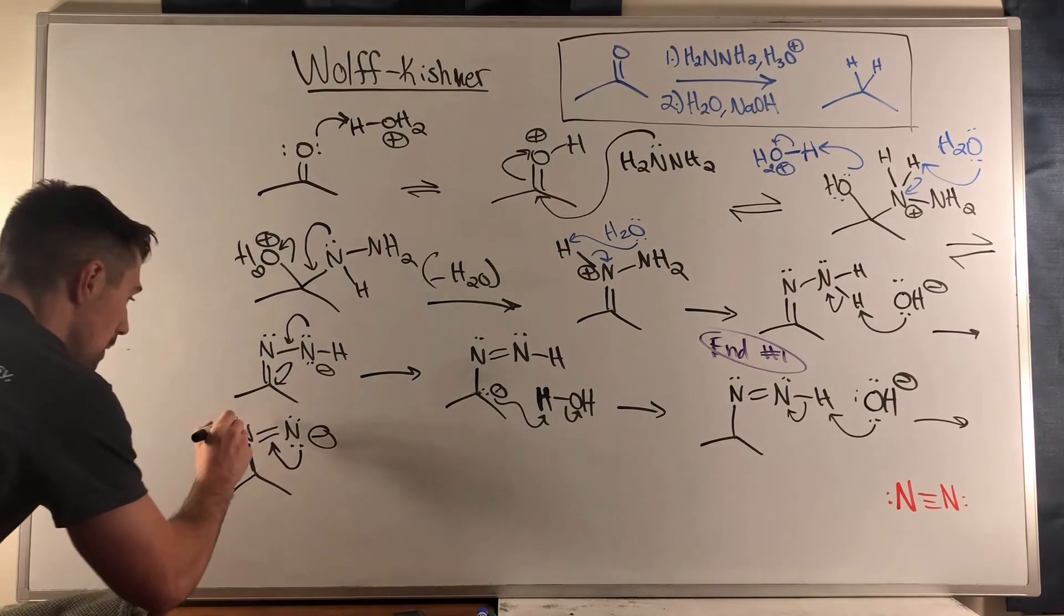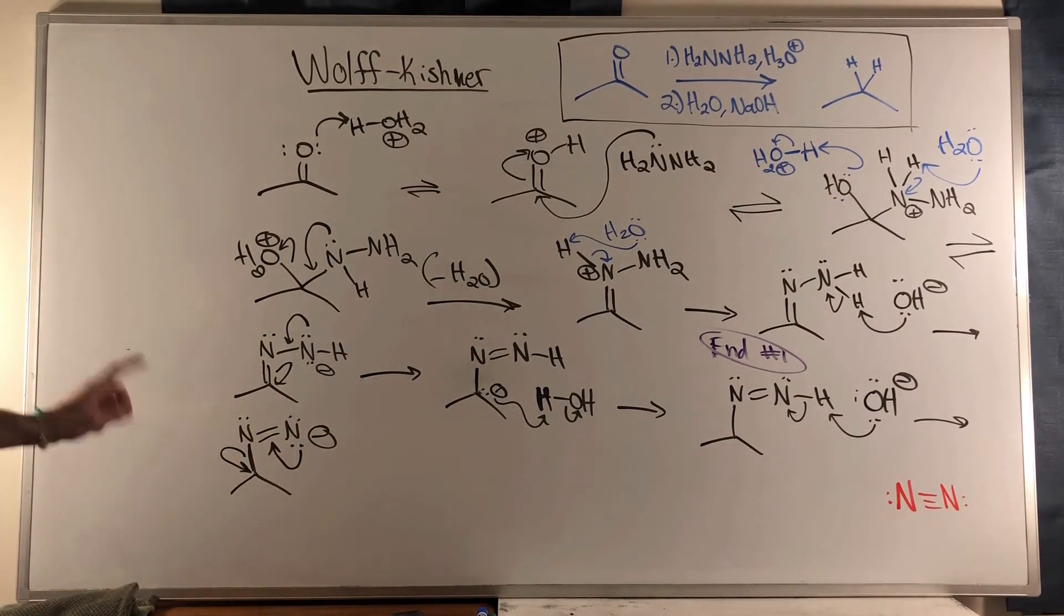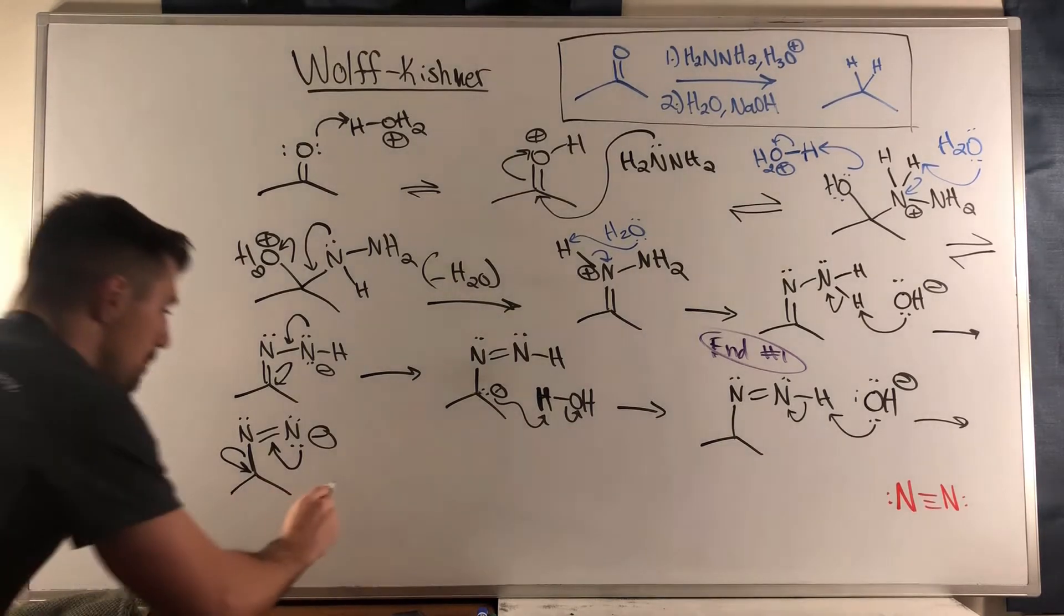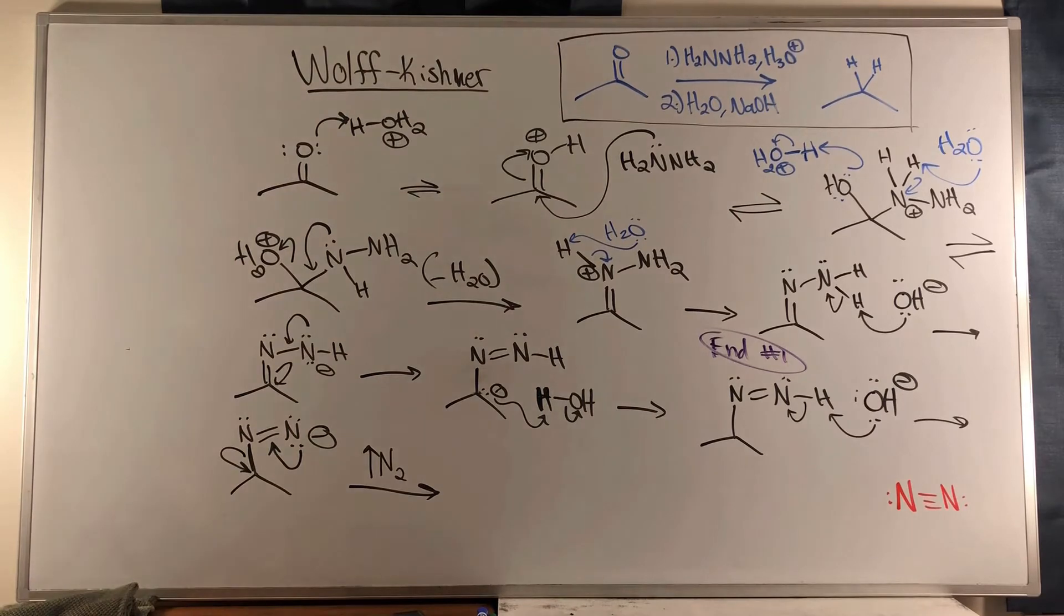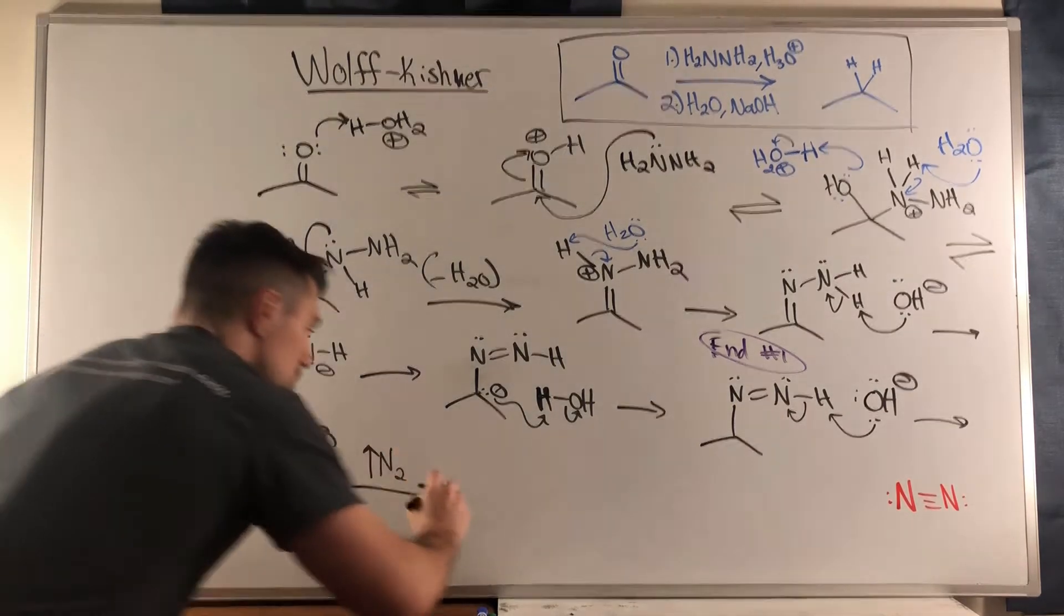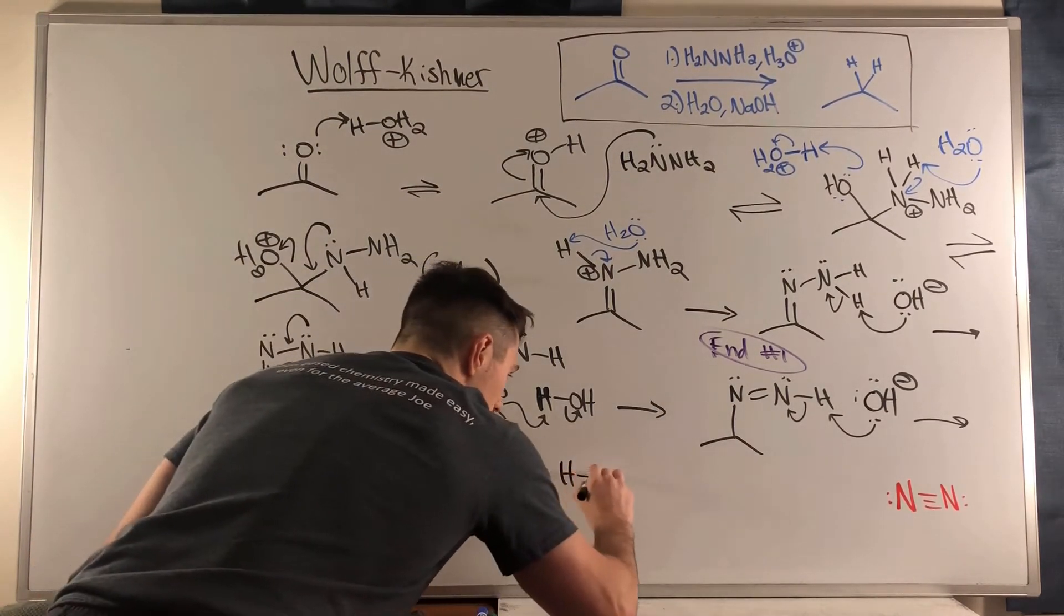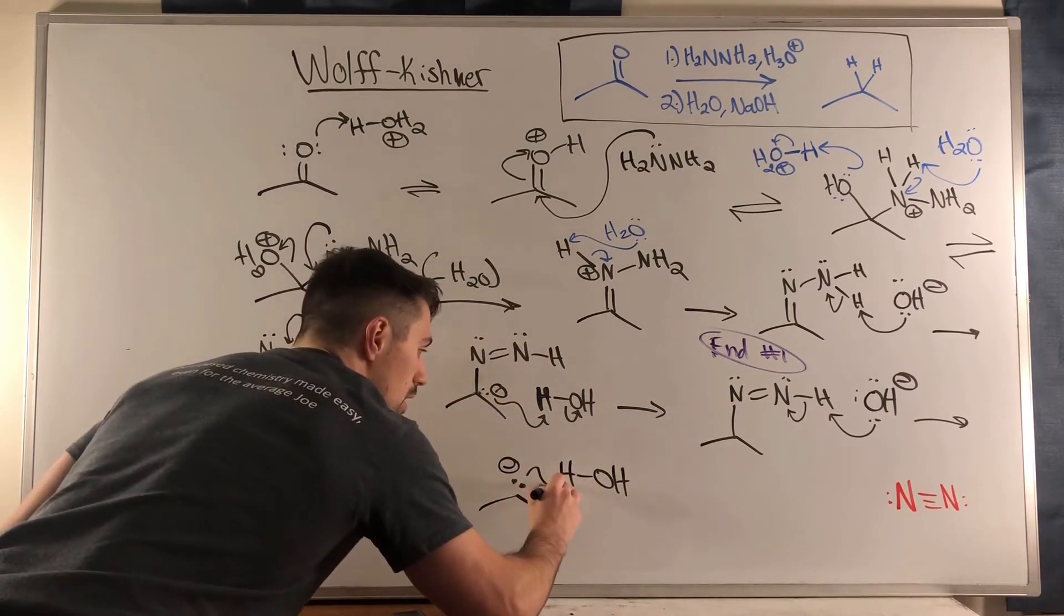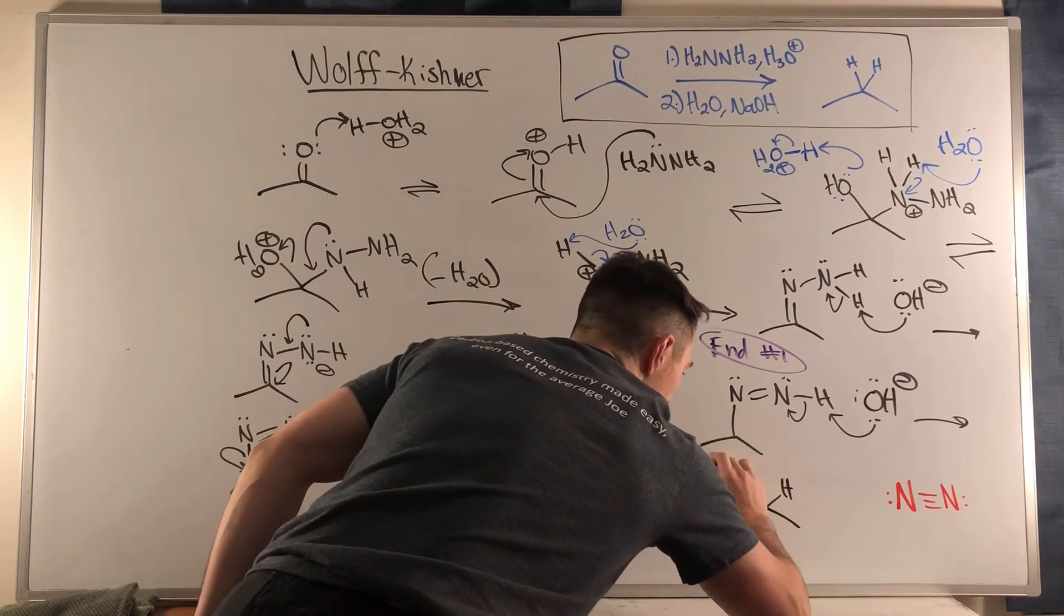So once you form this we know these electrons get booted onto the carbon but I hope you understand the magnitude of what just happened. We just created nitrogen gas that leaves our system and that carbon nitrogen bond is gone now. So at this point you then just have a carbanion right here that quickly snatches up a proton from water and then you have your Wolff-Kishner product.